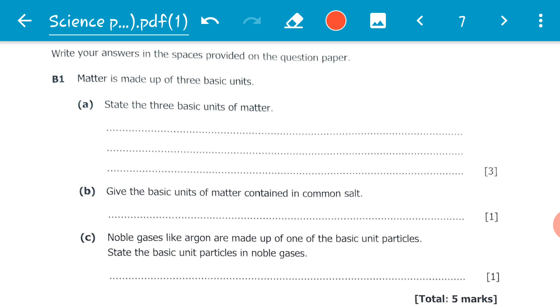November 2019 Science Paper 2. The first question is question B1. Question B1 reads: Matter is made up of three basic units. Part A: State the three basic units of matter. The three basic units of matter are actually, one: